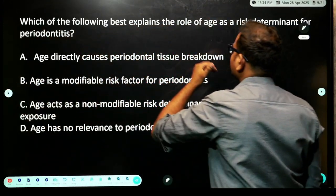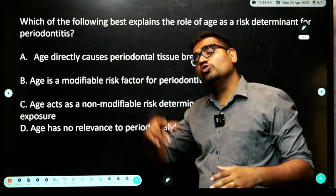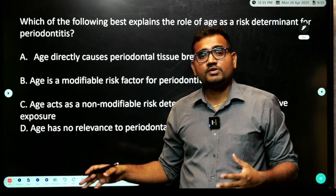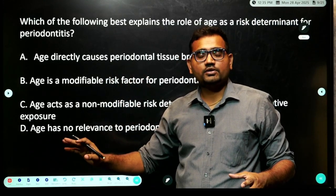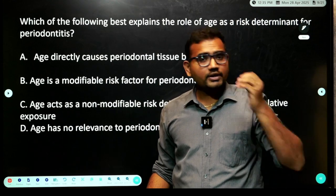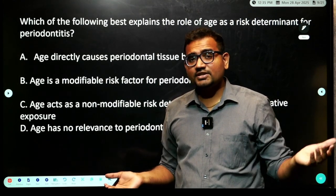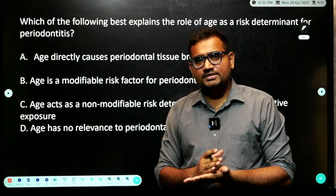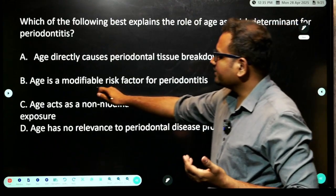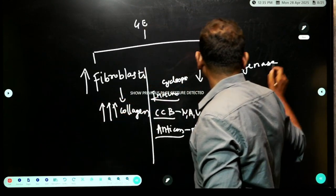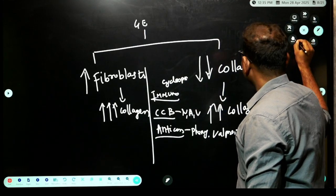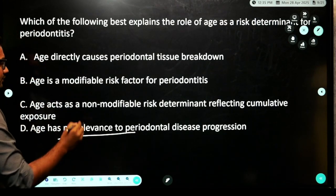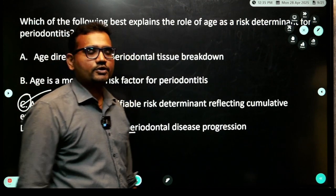Coming back to the question: which best explains the role of age? Age — the more the age, the prognosis is going to be good. For example, a 60-year-old male with 2 mm bone loss has a much better prognostic value than a 30-year-old with 2 mm bone loss, because at only 30 he already has that bone loss. Increase in age means good prognosis. Age is definitely a non-modifiable risk factor. The option saying it is not relevant to periodontal disease progression is absolute nonsense. The correct answer is age acts as a non-modifiable risk factor.